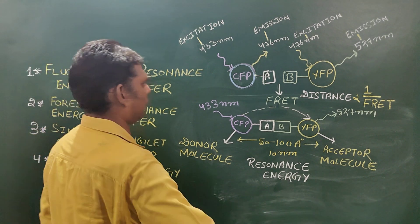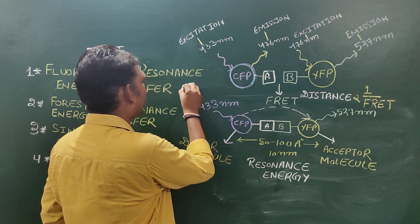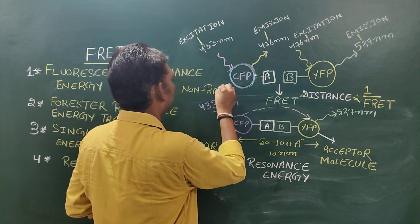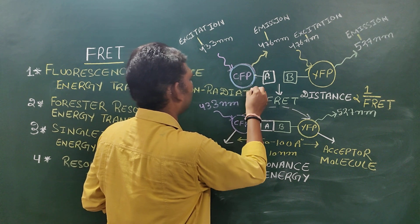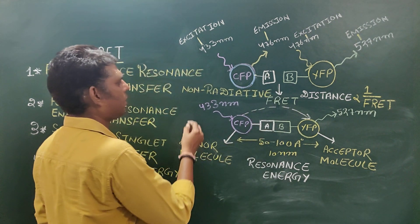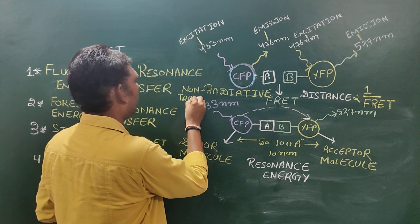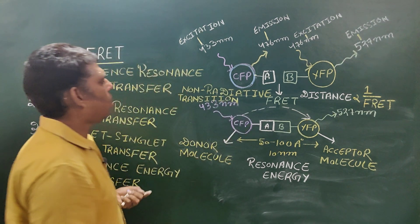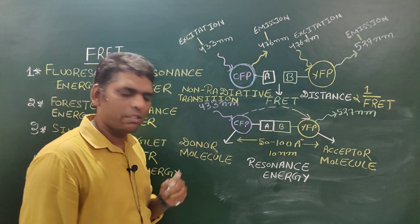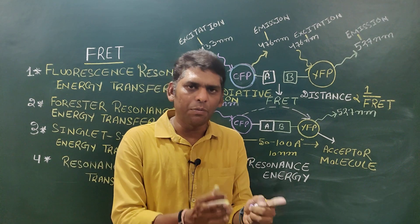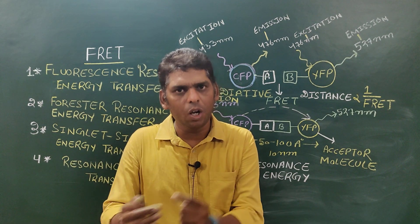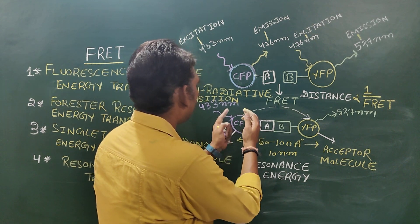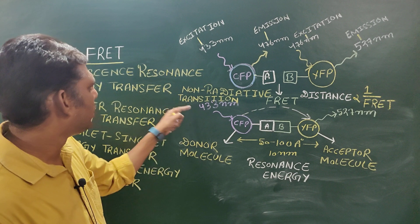FRET is a non-radiative energy transfer. Non-radiative energy transfer is a process in which energy is neither absorbed nor emitted as radiation — it is simply released as heat or transferred directly from one molecule to another. You can observe that the energy from one fluorescent molecule is transferred to another fluorescent molecule, which is why this is a non-radiative transition.